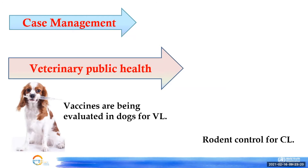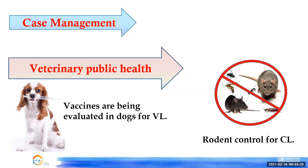However, controlling animal reservoirs is not an easy task — especially when rodents are among the leading reservoirs for cutaneous leishmaniasis, and controlling them in poor socioeconomic conditions is very difficult. For visceral leishmaniasis, trials are being carried out to evaluate vaccination of dogs to prevent them from acting as reservoir hosts, but results have not been very successful so far.